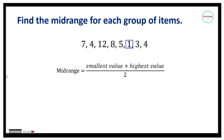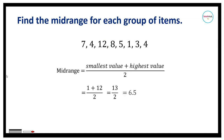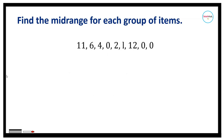For number one, to get the mid-range we are going to add the smallest value, which is 1, to the largest value, which is 12, and then divide the sum by 2. This is equal to 13 divided by 2, which equals 6.5.